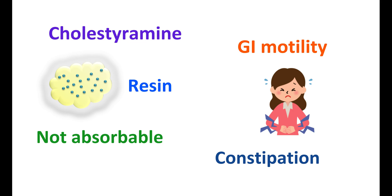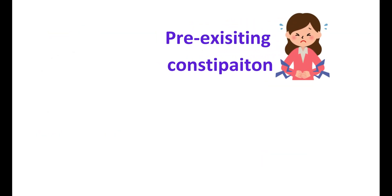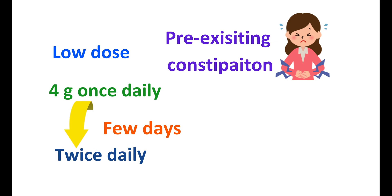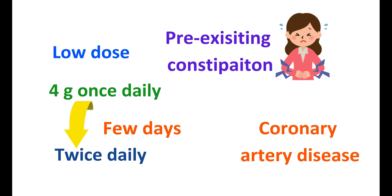People are suggested to take more fluids and fiber-rich food in order to relieve constipation symptoms. In people with pre-existing constipation, cholestyramine should be used carefully as it can further reduce GI motility, inducing trouble in defecation. Cholestyramine should be started at a low dose of 4 grams given once daily, and after a few days the dose can be slowly increased to 4 grams twice daily. In people with coronary artery disease, cholestyramine should be used carefully as constipation may be more pronounced.